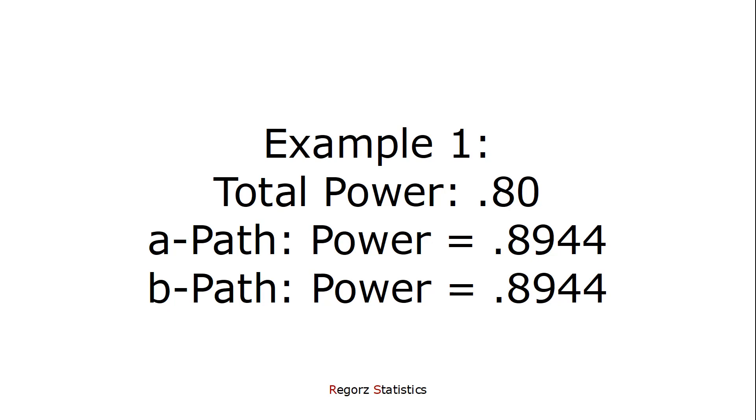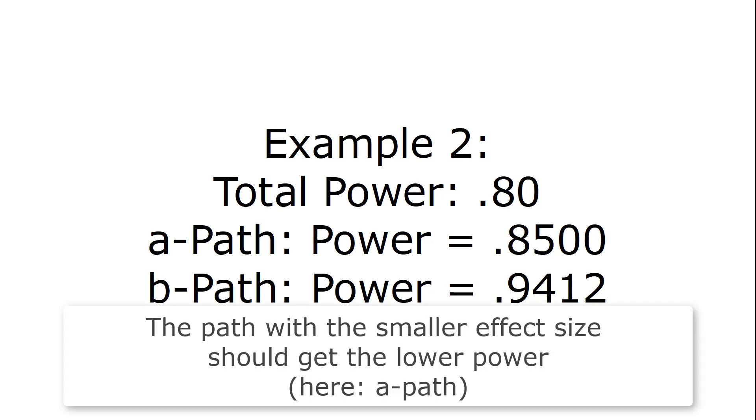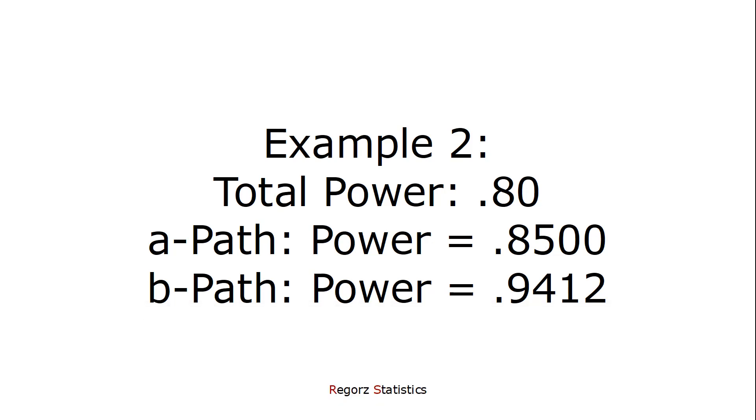If you expect different effect sizes you will get two different sample sizes for those two power analyses. And you would have to use the higher of the two. That's not efficient. So in this case you should try out different combinations as long as those combinations lead to a total power of 0.80, that is their product is 0.80. And you should do this until for both power analyses you get the same sample size. That is the sample size you need for the joint significance approach.